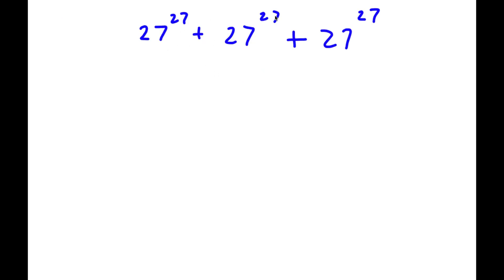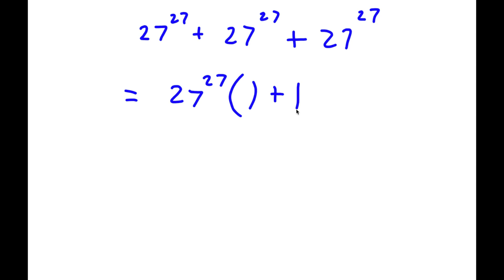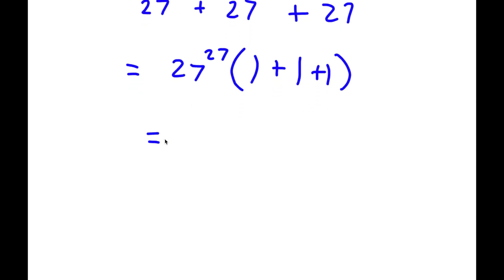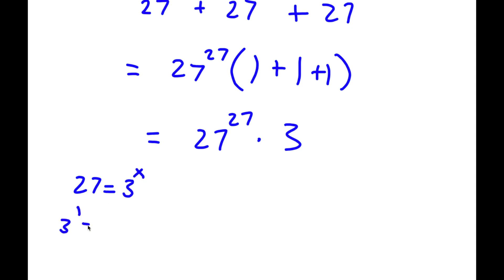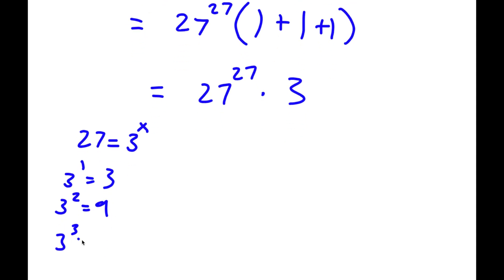Alright, so I have 27 to the power of 27 plus 27 to the power of 27 plus 27 to the power of 27. The first thing I'm going to do is factor out 27 to the power of 27. So now I have 27 to the power of 27 times — since 27^27 divided by 27^27 is 1, I have 1 plus 1 plus 1. Now 1 plus 1 plus 1 is 3, so I have 27 to the power of 27 times 3. Now to multiply these, I want them to have the same base. So I'll simplify 27, which equals 3 to the power of 3.